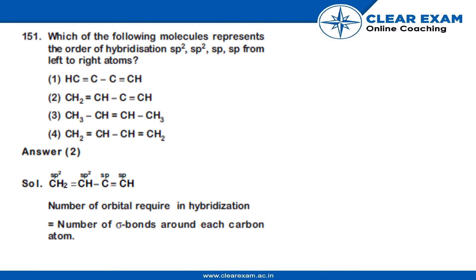Which of the following molecules represents the order of hybridization sp2, sp2, sp, sp from left to right atoms? The correct option is option 2. This C is sp2 hybridized, this C is sp2 hybridized, this C is sp hybridized,